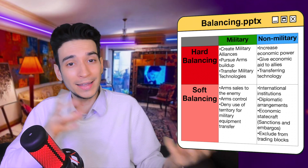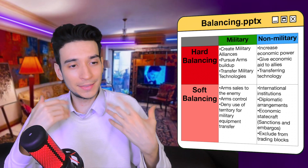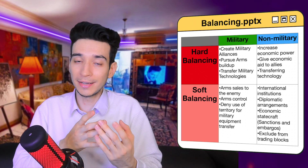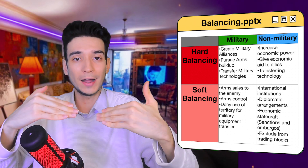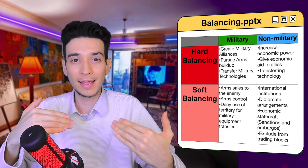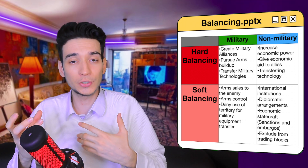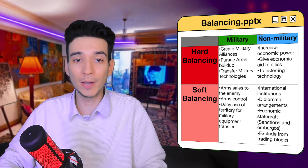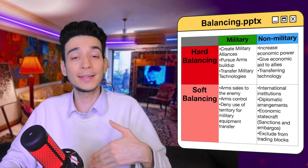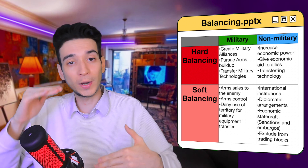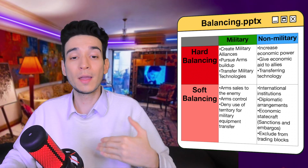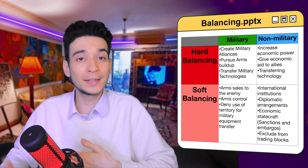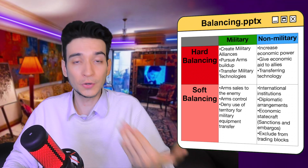The two main ways of a balancing strategy are hard balancing and soft balancing. Hard balancing involves actions that improve a country's own power against a rival, while soft balancing involves actions that weaken or undermine a rival's power. In both ways, they try to change the balance of power — one by gaining power and the other by weakening the other country.